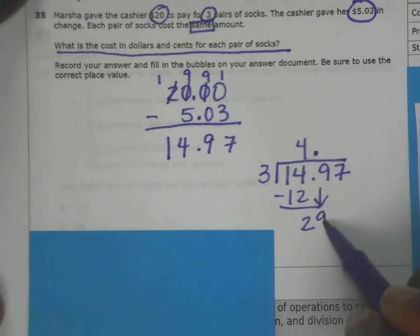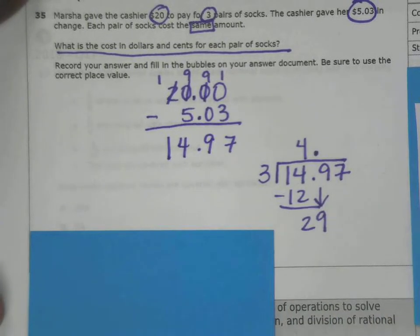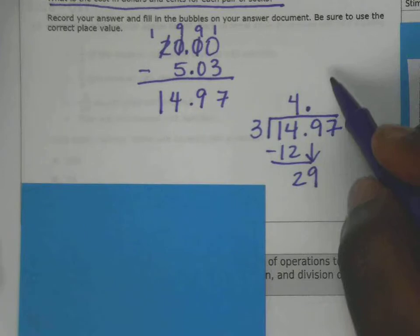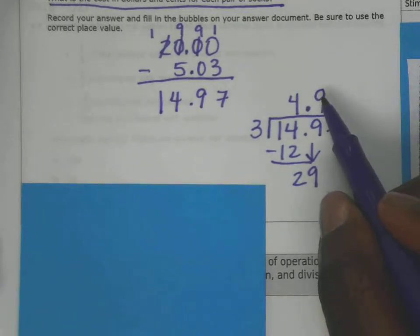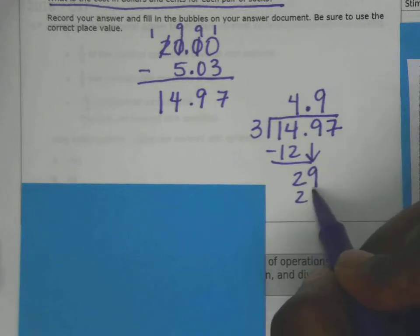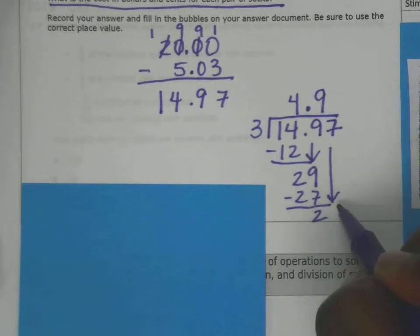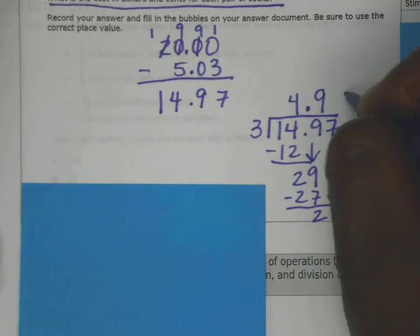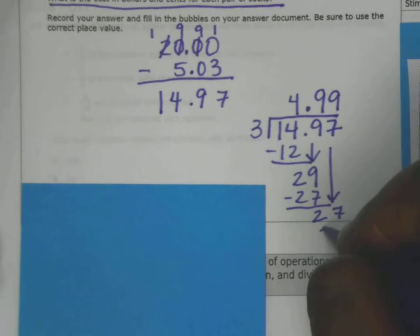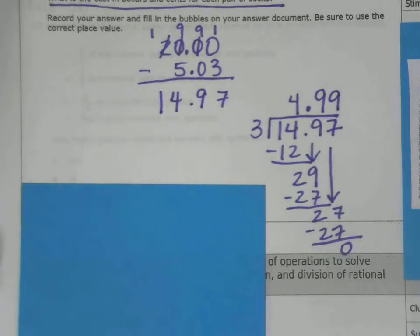That gives me 2. I forgot to put the decimal up, so I'll do that now. Bring down the 9. Three goes into 29 nine times. Nine times three is 27. Subtract, I get 2. Bring down the 7. Three goes into 27 nine times. Nine times three is 27. I got zero as a remainder with no more numbers to bring down, so I'm finished.